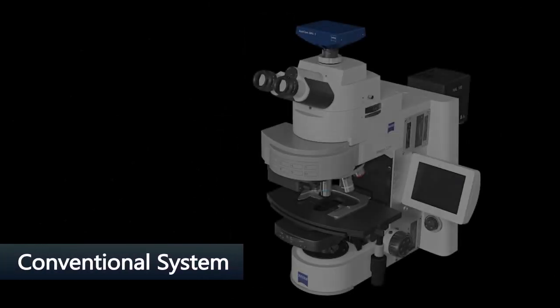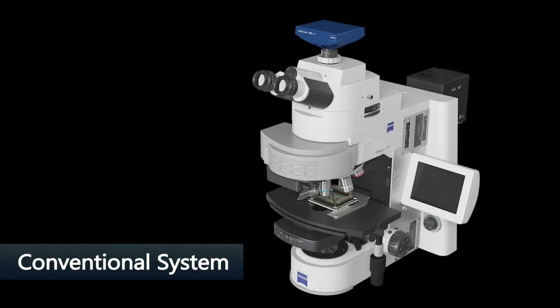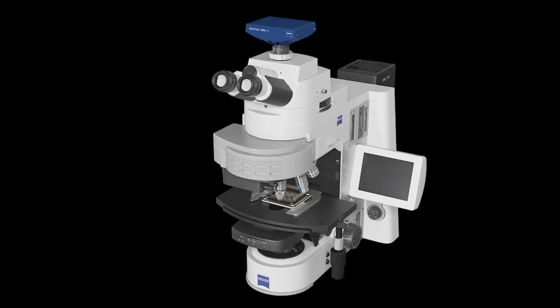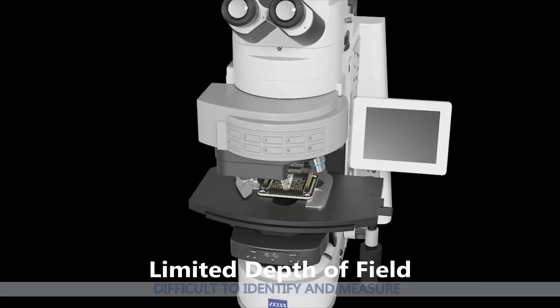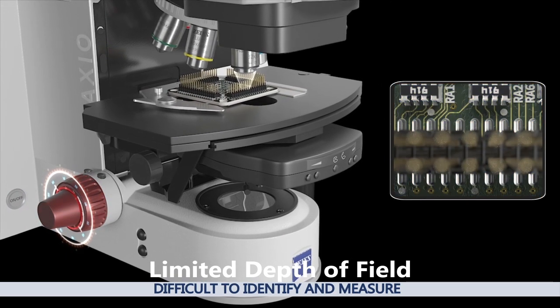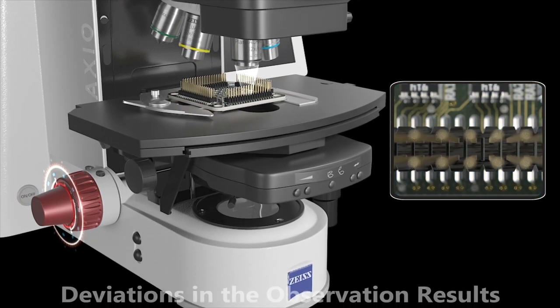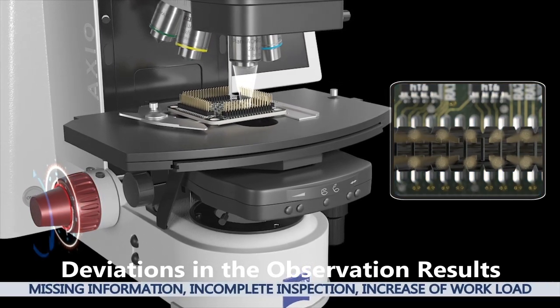The conventional system has a limited depth of field, so a user has to adjust the focus manually by moving the z-axis. It is difficult to identify the exact shape of the object instantly. The manual movements can cause deviations in the observation, missing information, incomplete inspection, and an increase in user workload.